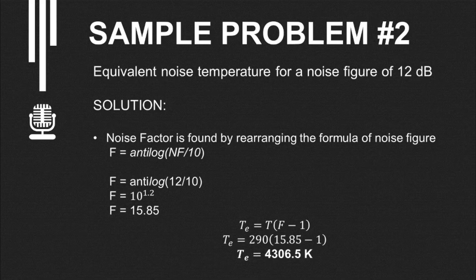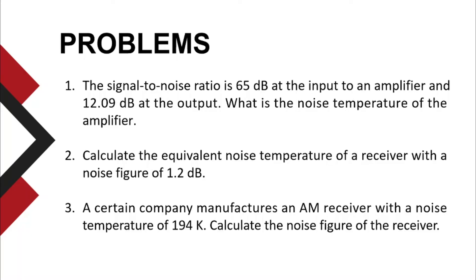Since we have F, we can now use the formula for equivalent noise temperature, which is TE equals T quantity F minus 1. The temperature we use here is 290 Kelvin. So 290 times 15.85 minus 1, and the answer will be 4306.5 Kelvin.